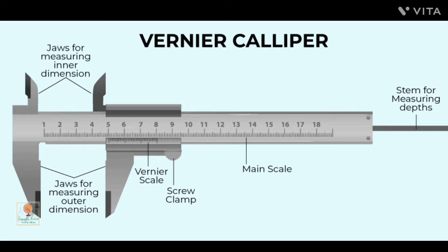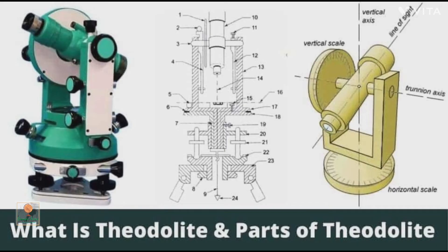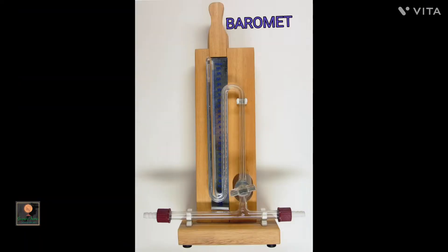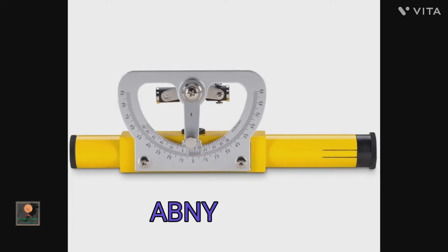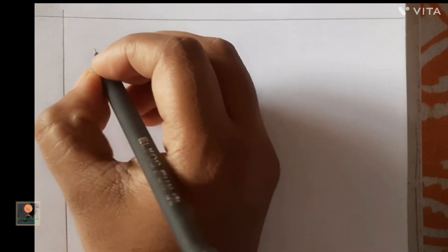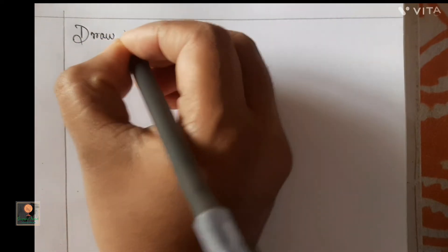The Vernier carries an index mark that forms the zero of the Vernier division, denoted by an arrow mark. The scale may be drawn as a straight line or as an arc. The device is based on the fact that it is easier to see the exact coincidence of two lines than to judge the distance between them. It is used in precision instruments like theodolite, sextant, barometer, planimeter, abney level, etc.